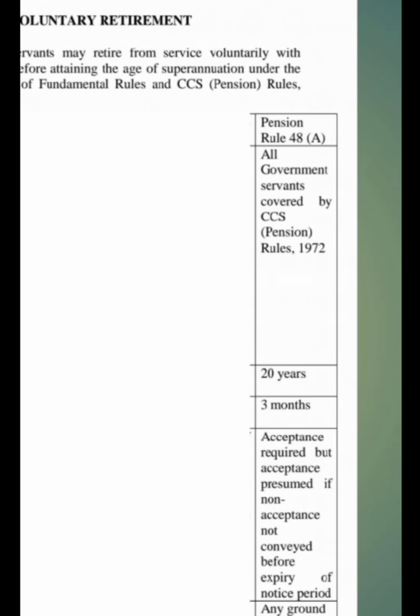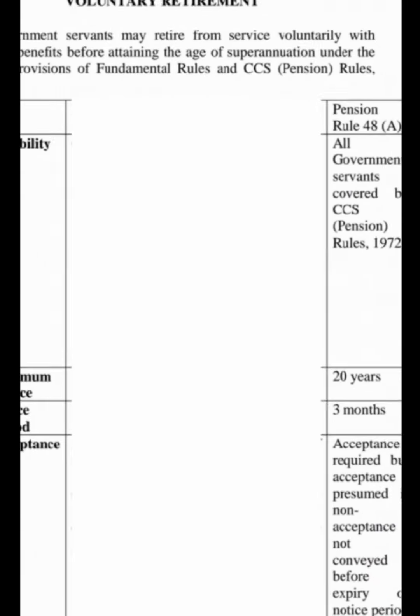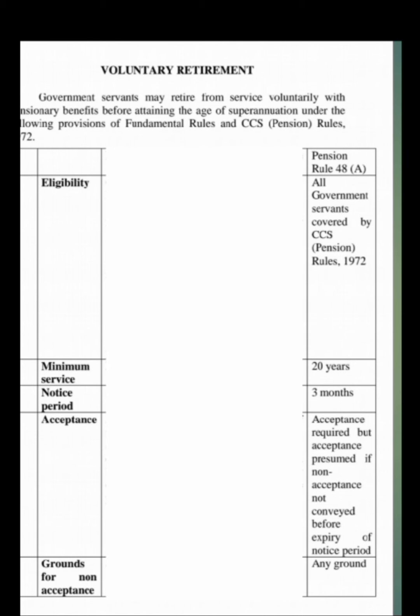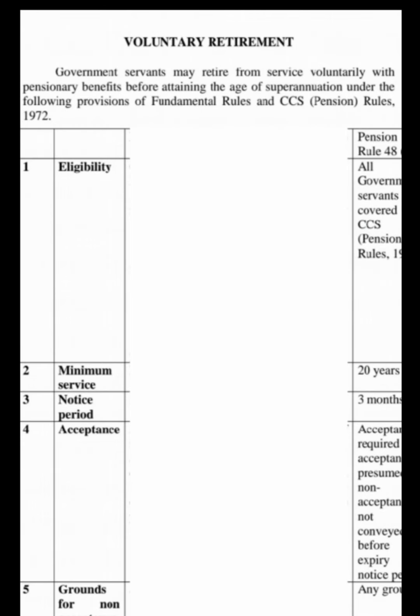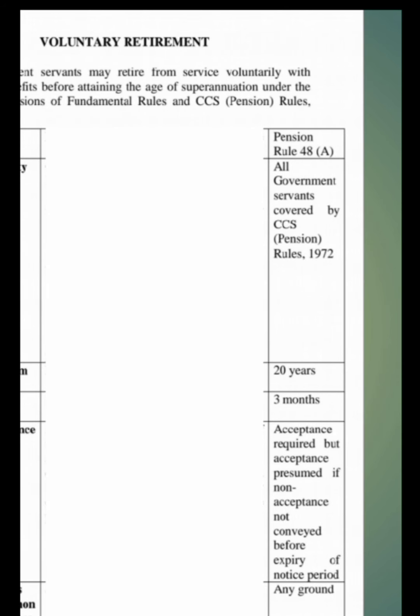According to Pension Rule 48A — note here: Eligibility covers all government servants covered by CCS Pension Rules 1972. Minimum service: 20 years. Notice period: 3 months. Acceptance: Required, but acceptance is presumed if non-acceptance is not conveyed before expiry of notice period. Grounds for non-acceptance: Any ground.